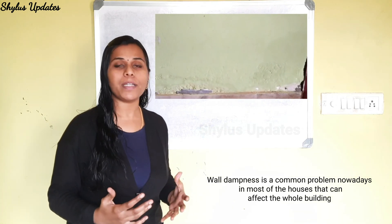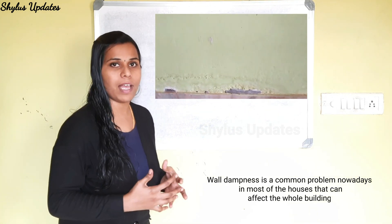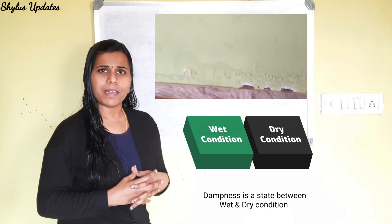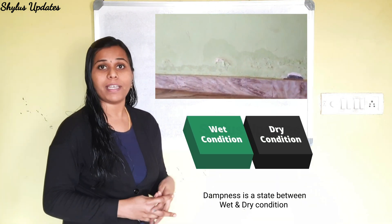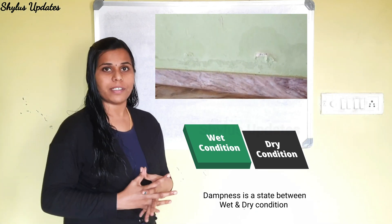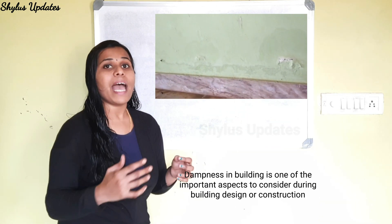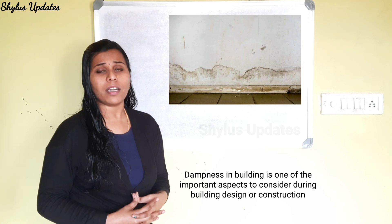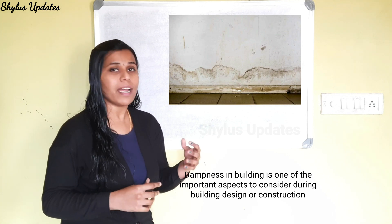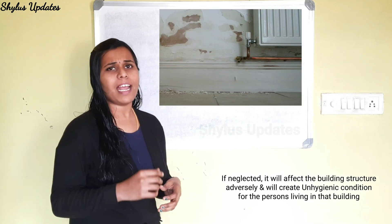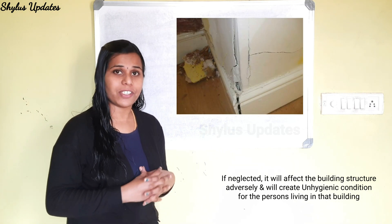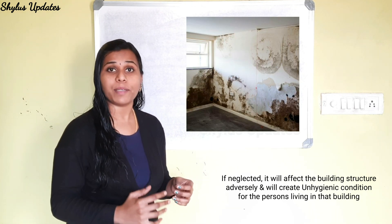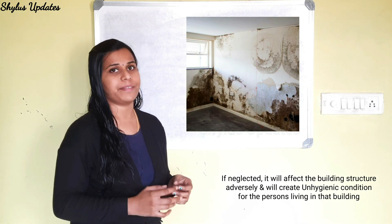Wall dampness is a common problem nowadays in most houses and can affect the whole building. Dampness is a state between wet and dry condition. Dampness in buildings is one of the important aspects to consider during building design or construction. If neglected, it will affect the building structure adversely and will create unhygienic conditions for the persons living in that building.